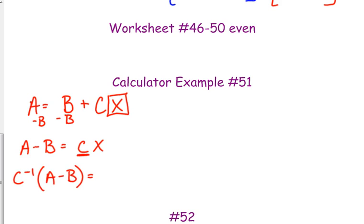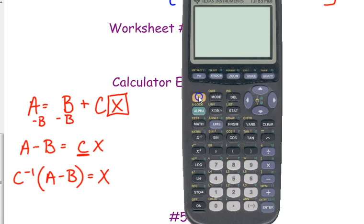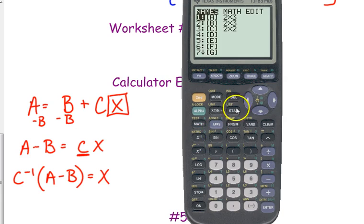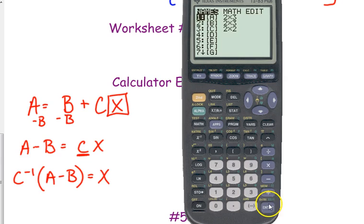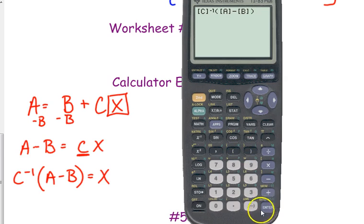And again, that always comes first. So now that we have those matrices in our calculator, all we have to do is go to our matrix menu under names. We need C first, C inverse, parentheses, and then we need A minus B. Close your parentheses.